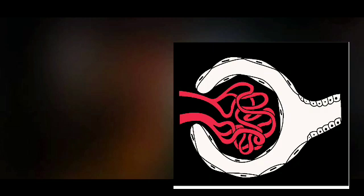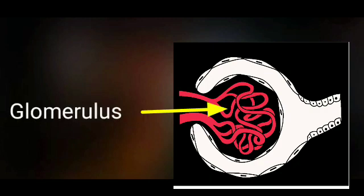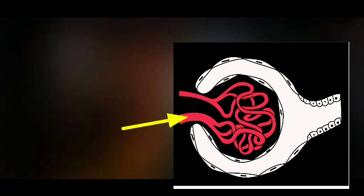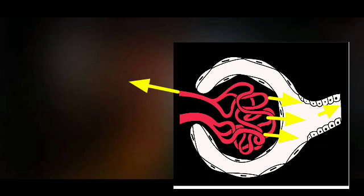The tuft of capillaries which fits into the cup-shaped Bowman's capsule is called the glomerulus. The blood to be filtered enters the glomerulus through the afferent arteriole, and after filtration in the glomerulus, this blood passes through the efferent arteriole.